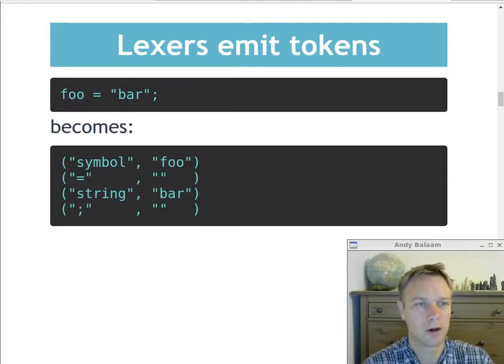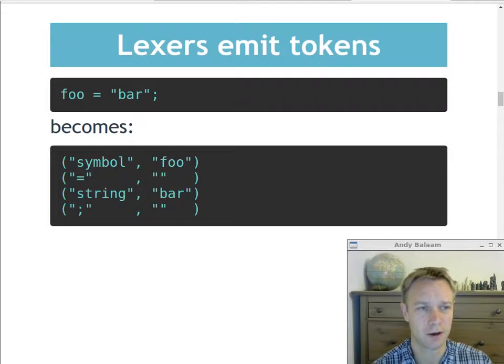Which are basically very dumb bits of just the sort of underlying structure of the code you type. So things like a number is a token. So here's an example of splitting up some source code into tokens. So at the top we can see some source code, foo equals bar, where bar is a string.